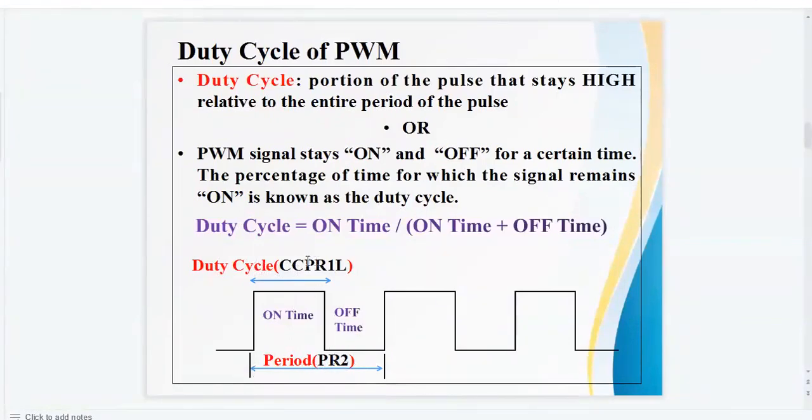In PIC controller, there are two registers CCPR1L and PR2. These two registers play an important role in PIC control while writing a program for PWM in PIC controller.